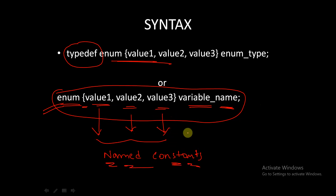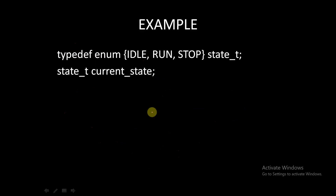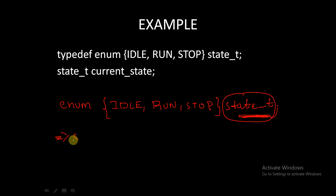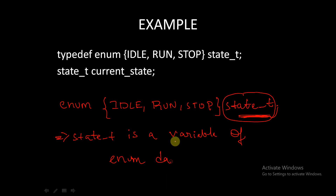Let's see an example. We write 'enum' followed by named constants — let's say 'idle', 'run', and 'stop' — and the variable name is 'state_t'. So 'state_t' is a variable of enum data type.